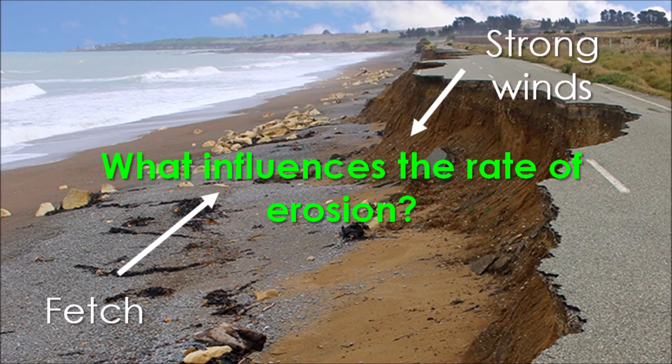We've then got strong winds. The strength of the winds will determine whether erosion is taking place fast or slow on our coastline. Strong winds that blow for a very long period of time are known for creating destructive waves, which have a very weak swash but a really strong backwash, and therefore erosion takes place along the coastline when destructive waves are present.